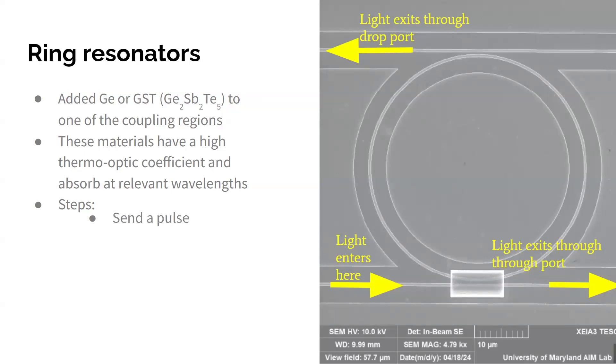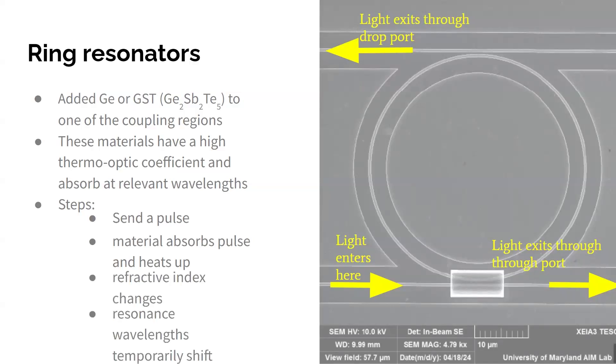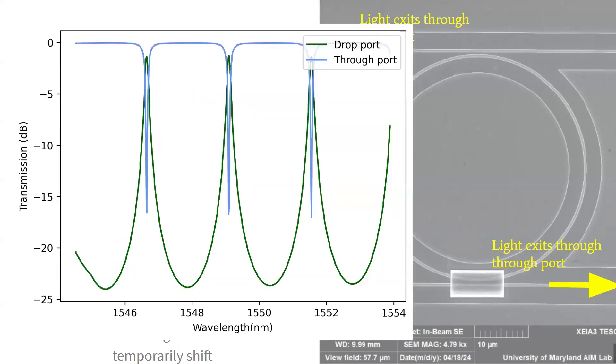So we're able to heat them up with the pulse. So the basic steps are, we send a pulse in, the material absorbs that pulse and heats up, its refractive index changes, and then we see that the resonance wavelengths of the system temporarily shift. And here's a bit more about what I mean by resonance wavelengths. We can see that if we change the wavelength of the light we send in, and here in the blue is the through port, at certain wavelengths, there's a giant drop in transmission, and we see peaks at the drop port at those wavelengths.